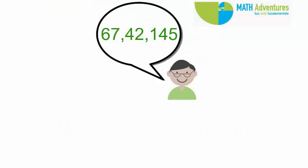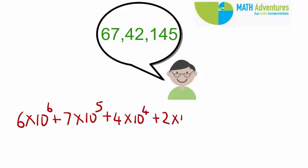How will we represent 67,42,145 using power notation? Is it not 6 into 10 to the power of 6 plus 7 into 10 to the power of 5 plus 4 into 10 to the power of 4 plus 2 into 10 to the power of 3 plus 1 into 10 to the power of 2 plus 4 into 10 to the power of 1 plus 5 into 10 to the power of 0?